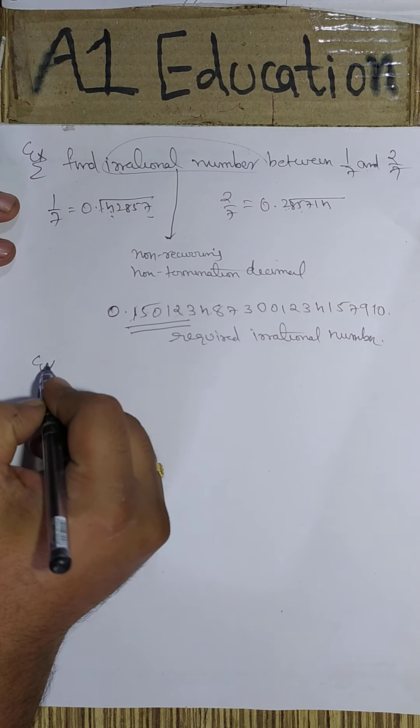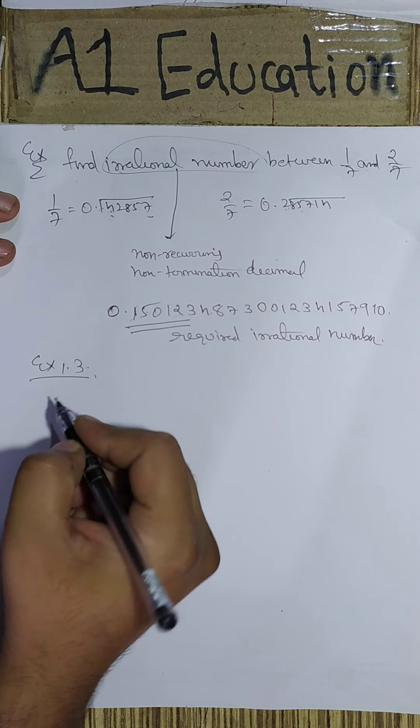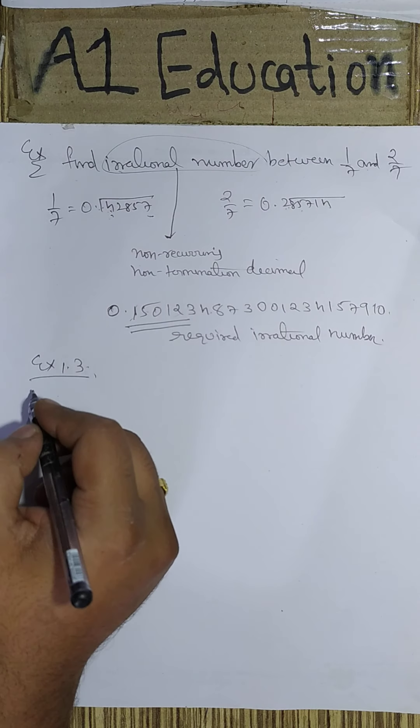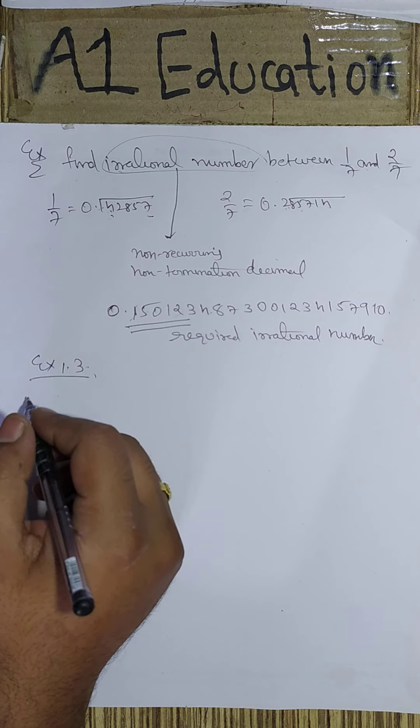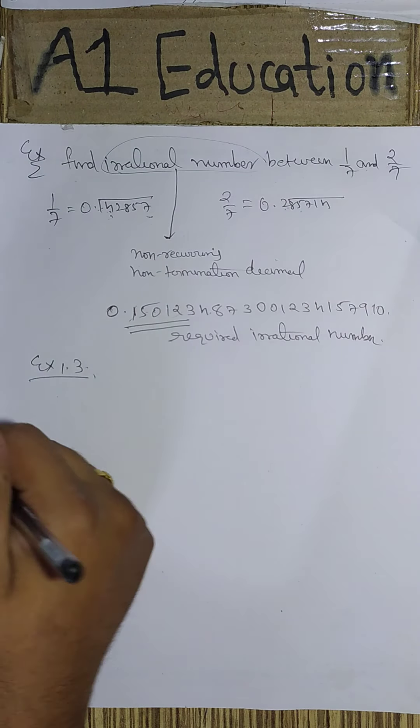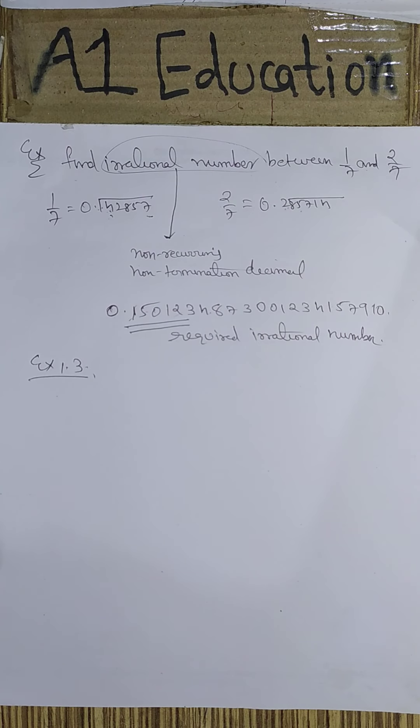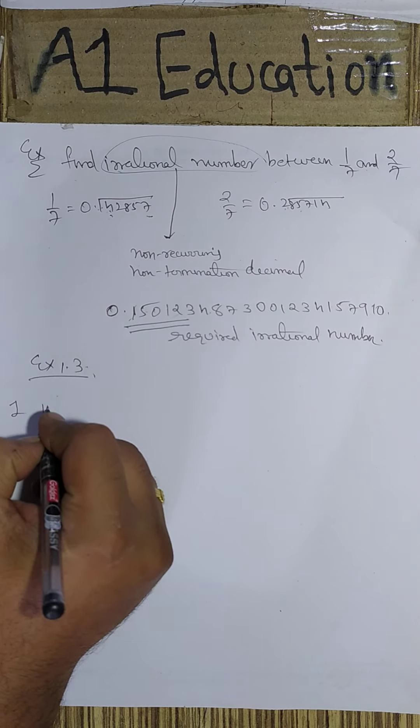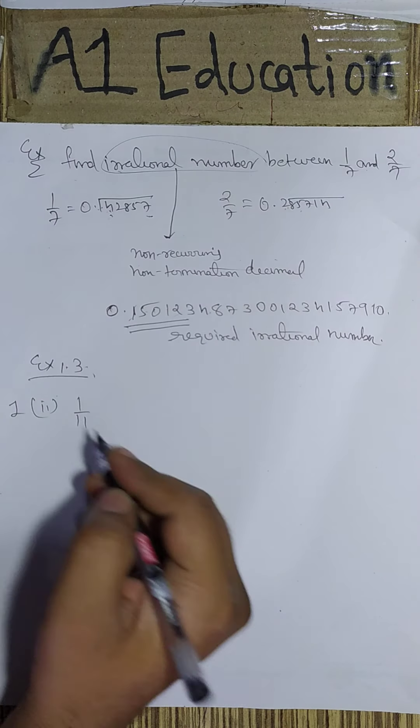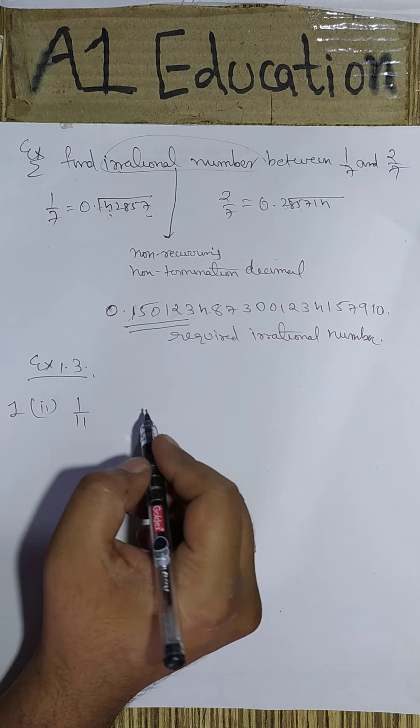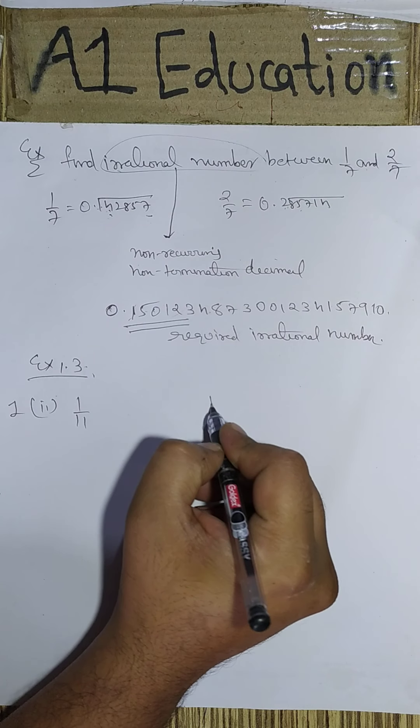Next we move on to exercise 1.3. Question number 1 says write the following in decimal form and what kind of decimals they are. So let us say the second one I do, which is 1/111. I have to show what kind of decimal this is.